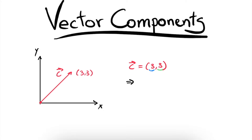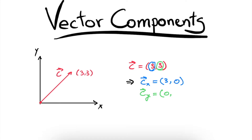To find the vectors associated with the x and y components, we simply write the following. The vector cx will have the x component of our original vector as its x component, and 0 as its y component. So this vector is completely in the x direction. Similarly, cy will have 0 for x and the y component of our original vector as its y component — a vector completely in the y direction. We have now algebraically found the vectors associated with the x and y components.